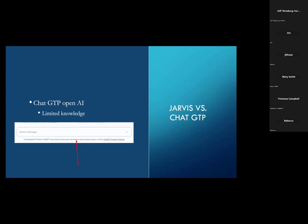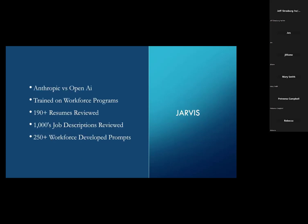My program is called Jarvis. ChatGPT has limited knowledge — the free version's latest iteration is from September 2021 and may produce inaccurate information. With Jarvis, I've pulled in federal information, my own work data, 190 resumes, thousands of job descriptions, and developed over 250 prompts to help you help yourself.